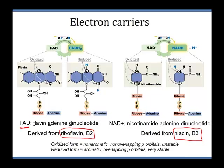These electron carriers are found everywhere — in the cytoplasm, in the mitochondria, everywhere a redox reaction is done, which is everywhere inside the cell. Looking at FAD: Flavin Adenine Dinucleotide. We recognize the adenine — that's from ATP and the A in DNA and RNA. A nucleotide has three components: a five-carbon sugar, a phosphate group, and a nitrogenous base. FAD is a dinucleotide — two nucleotides joined together end to end — with ribose, adenine, two phosphate groups, and the nitrogenous base called flavin.